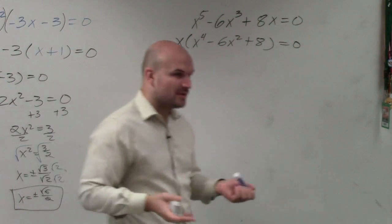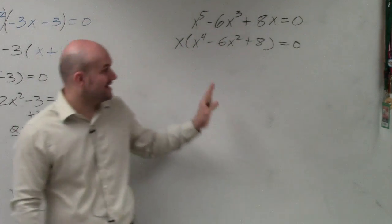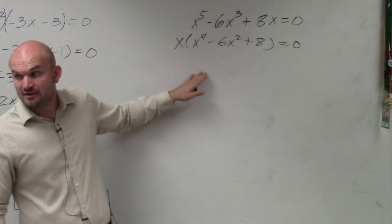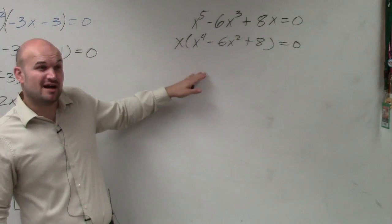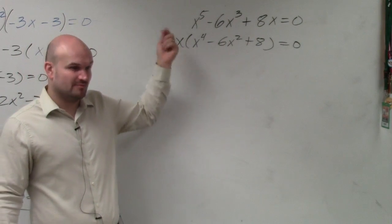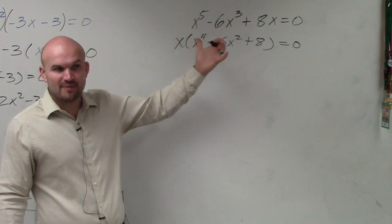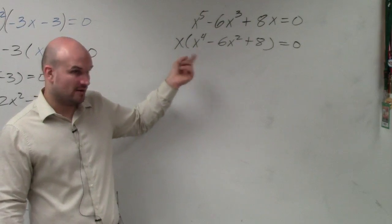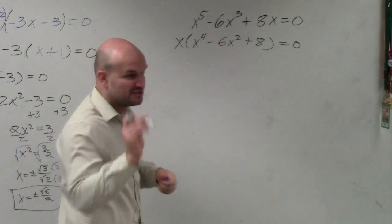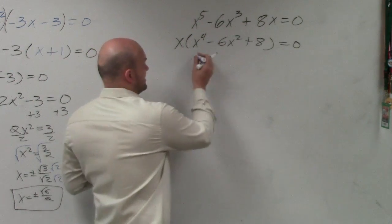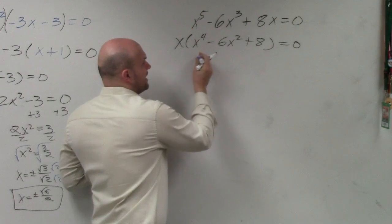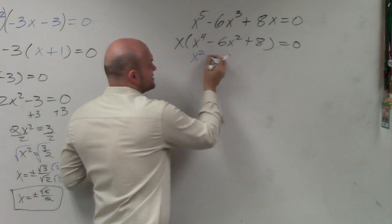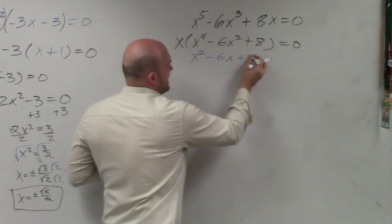Now to understand a problem like this, what I want you to understand is: here's a trinomial they want us to factor. But instead of it being a quadratic trinomial — meaning raised to the second power, which we know how to factor — it's being raised to the fourth power. So for just a quick second, forget about this problem and let's rewrite it as x squared minus 6x plus 8.